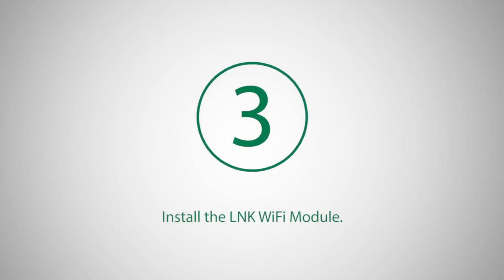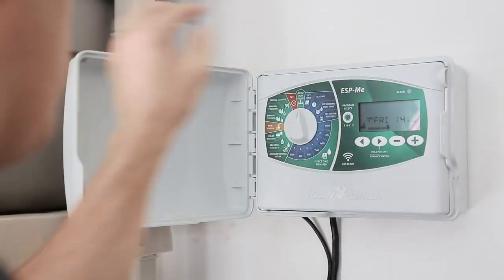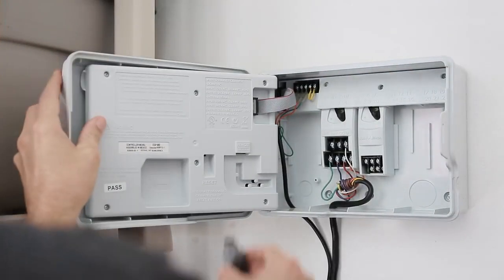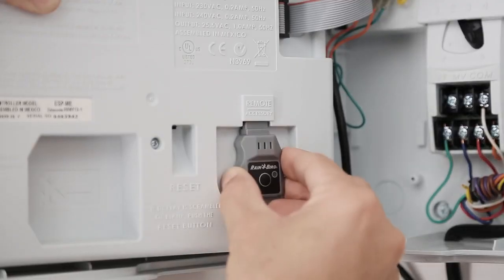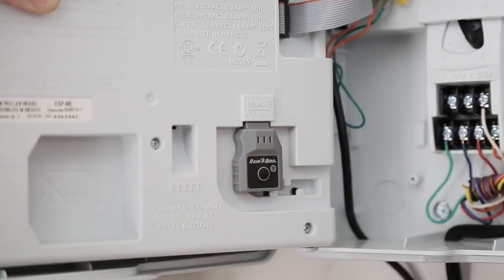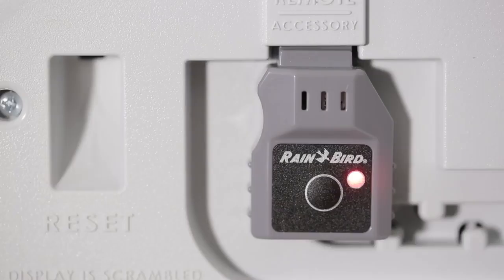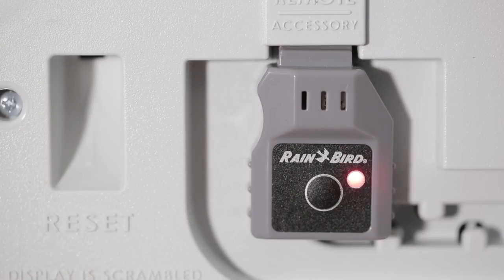Insert the LINQ Wi-Fi module into the accessory port of your Rainbird controller. The light on the LINQ Wi-Fi module should start blinking, alternating between red and green, which means it's broadcasting an access point signal, also known as a hotspot.